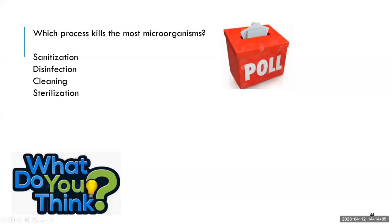Brianna launched a final poll for the students on the four APA recovery steps — sanitizing, disinfecting, cleaning, and sterilizing — asking which one reduces the most microorganisms. The correct answer is the fourth option, sterilization, as it achieves the highest reduction in microorganisms across the four levels.